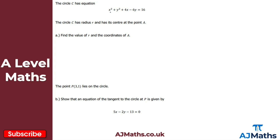The equation is not in the standard form x minus a all squared plus y minus b all squared equals r squared, so we need to rearrange it. Grouping x terms together and y terms together and completing the square on each variable separately, we get x squared plus 4x, then y squared minus 6y, all equal to 16.